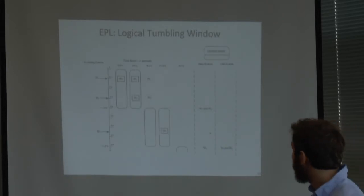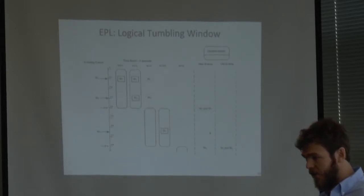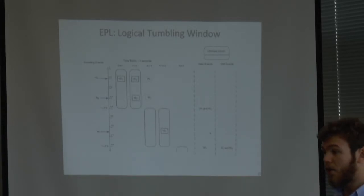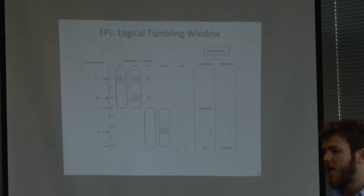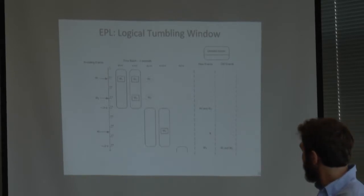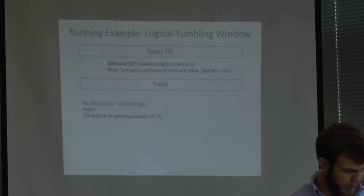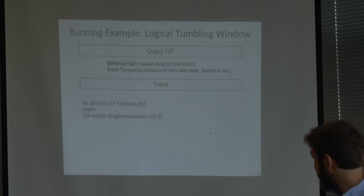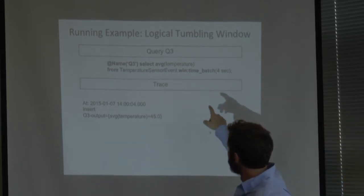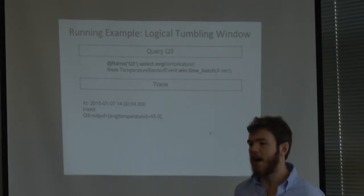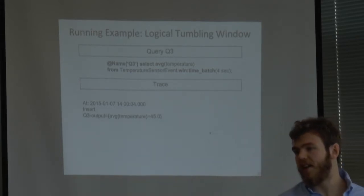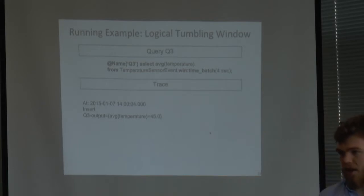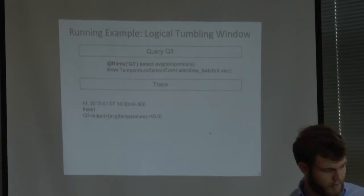Then we have the logical tumbling window - it's again defined over time, but this time two consecutive windows are not overlapping. The whole content is trashed, and remember we are in a transient context so there is no way to retrieve it. Here is the example: average computed over four seconds but this time tumbling. The syntax uses batch - batch is a synonym. Tumbling windows are defined in EPL also as batch windows, but we prefer the tumbling naming for them.